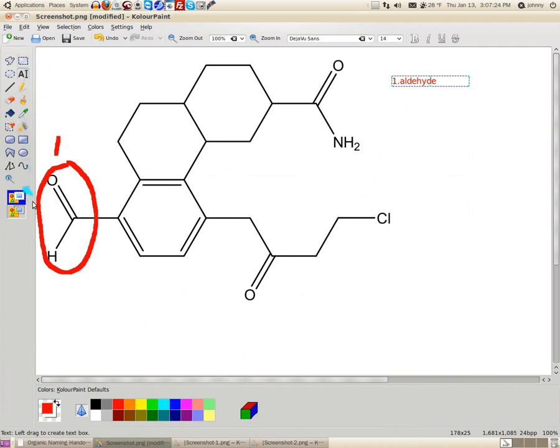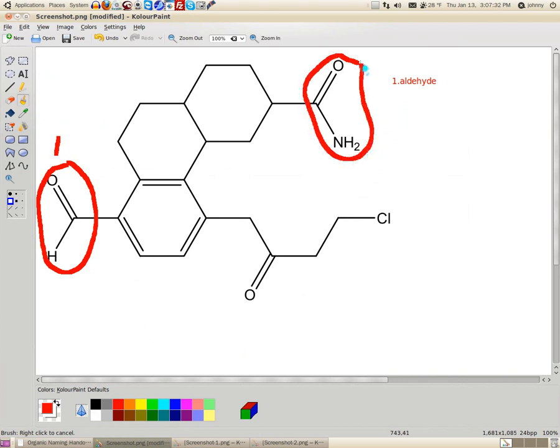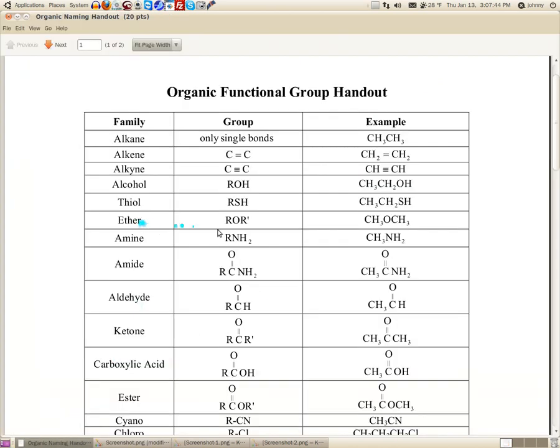The next one that I'm going to easily identify is this one. Now notice I didn't circle the R, so don't get mad at me. Okay. This is my second one, so I'm going to put the two here. Now, this, if you look closely, we know it's either an amine or an amide. So let's go back and look at the chart.